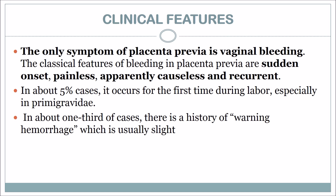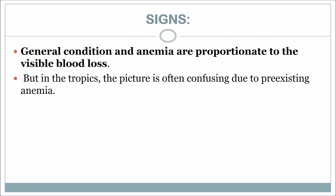The only symptom of placenta previa is vaginal bleeding. The classical features of bleeding in placenta previa are: sudden onset, painless, apparently causeless, and recurrent. In about 5 percent of cases it occurs for the first time during labor, especially in primigravidae. In about one third of cases there is a history of warning hemorrhage, which is usually slight. General condition and anemia are proportionate to the visible blood loss.